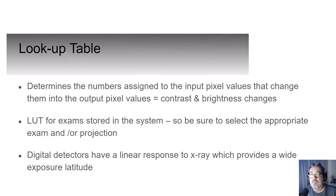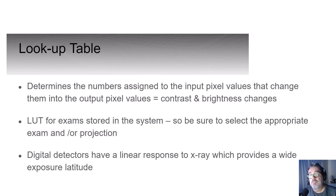A lookup table is essentially an algorithm or predetermined set of instructions that the software applies to the initial image histogram in order to present a very specific type of appearance on the radiograph. If you select PA chest when you perform that view, the computer will assign the lookup table to make that image appear optimum once it receives the data from the actual radiograph produced.